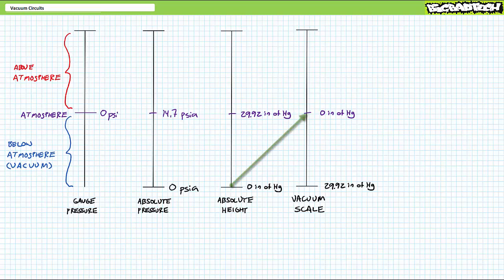Thus, we have today's vacuum scale, where 0 inches of mercury is atmospheric conditions, and 30 inches of mercury a perfect vacuum.